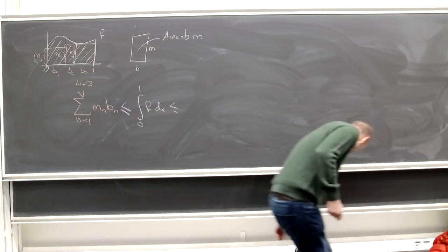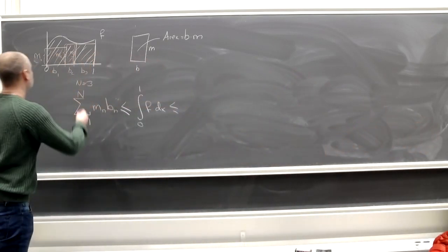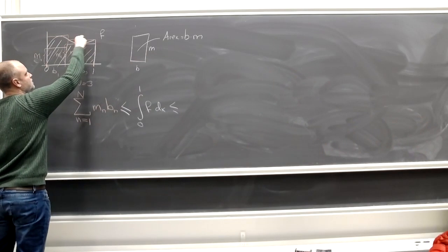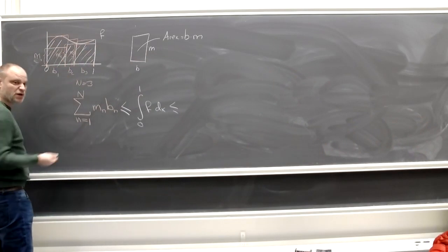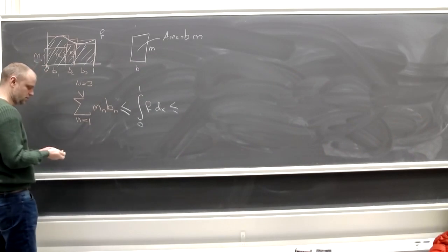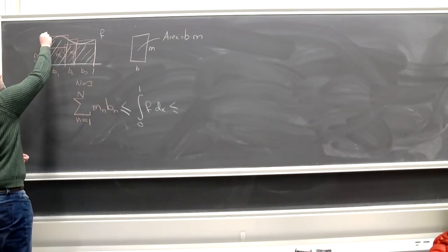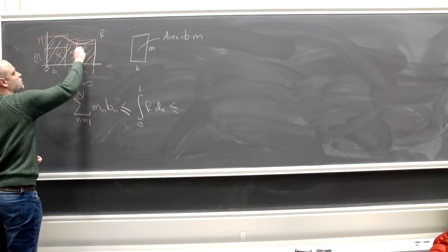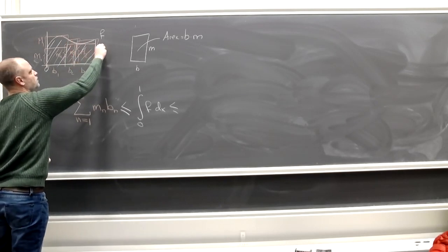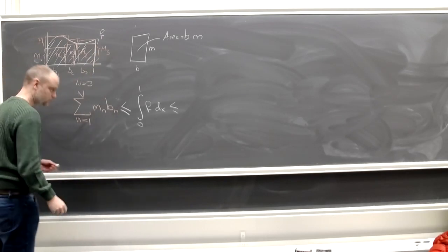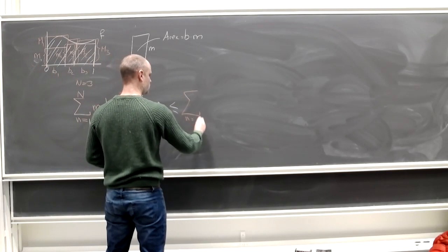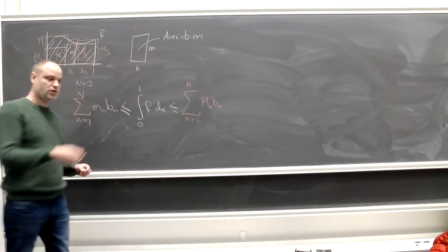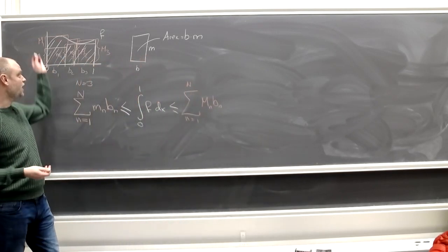This number is clearly less than what I want to be my integral. Let me use the integral notation, although we still haven't really defined it. Similarly, we can play the same game. Instead of taking infima, we take the suprema. Then we get rectangles with the same base but new heights. So this height would be M1, this M2, and this M3.